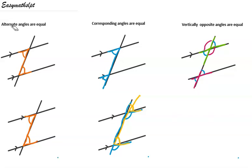So these two angles are equal, and these two angles are equal. Alternate angles are equal and form a Z shape. Corresponding angles are also equal and form an F shape. Vertically opposite angles are equal and form an X shape.